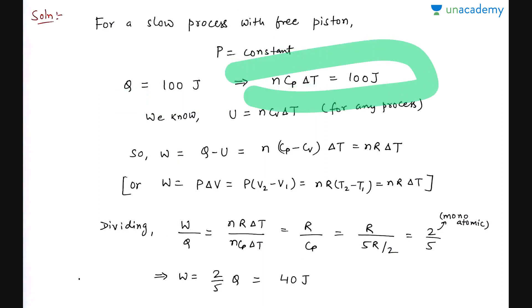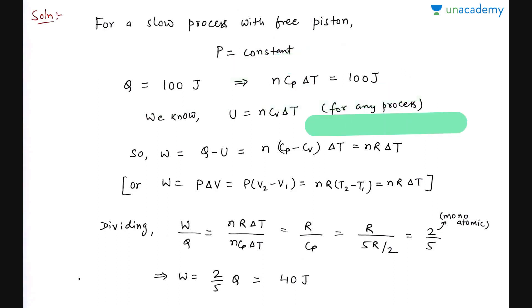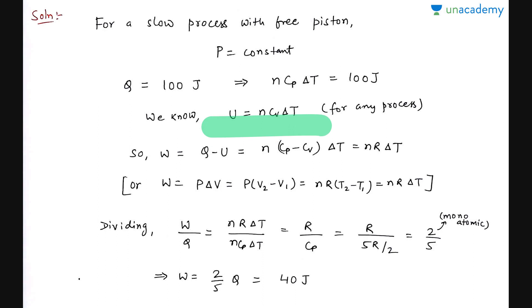At constant pressure, Q = nCpΔT, and that equals 100 joules. Now in any process, ΔU = nCvΔT. That is true for any process, because change in internal energy is a state function, not a path function.